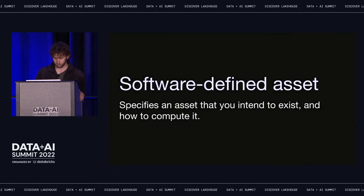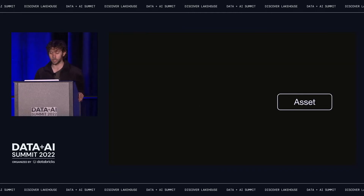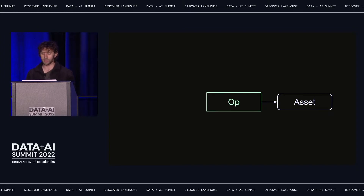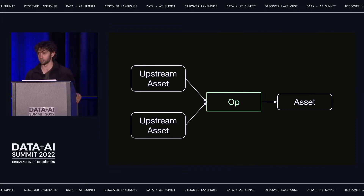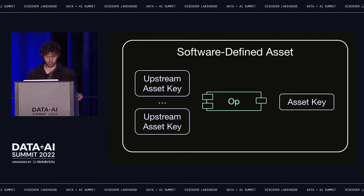A software-defined asset specifies an asset that you intend to exist, and how to compute that asset's contents. Assets are produced by computations, which in Dagster we call ops. A software-defined asset is basically the combination of three things: it has an asset key, which identifies the asset it corresponds to — for example, the name of a table in a database; it has an op, which is the function that can be run to produce the asset; and it has upstream asset keys, which reference assets that our op will read from to compute our asset. The upstream asset keys usually correspond to the asset keys of other software-defined assets, which means a group of software-defined assets naturally forms a graph.